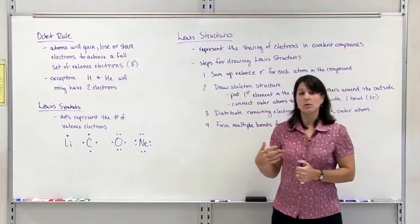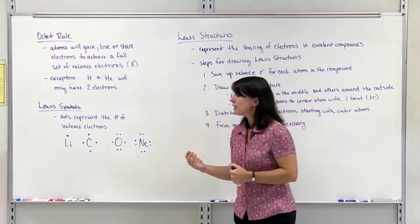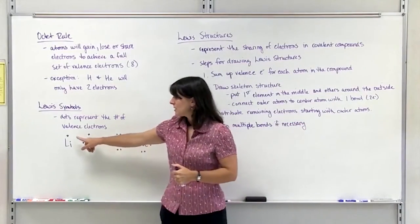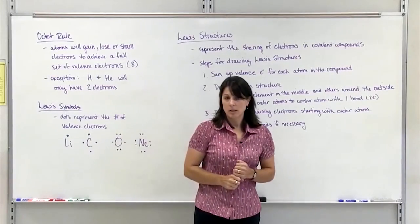We can represent the number of valence electrons in an element using Lewis symbols. We will use a dot to represent the number of valence electrons.